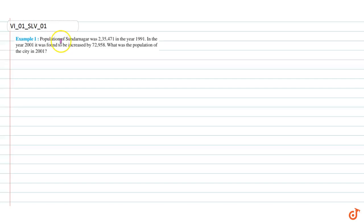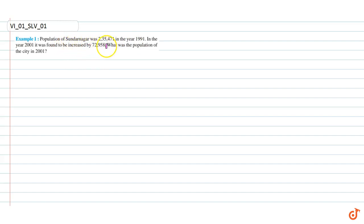In this question, it is given that the population of Sundarya Nagar was 2,35,471 in the year 1991. In the year 2001, it was found to be increased by 72,958. What was the population of the city in 2001?